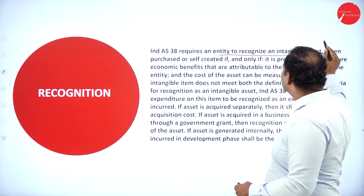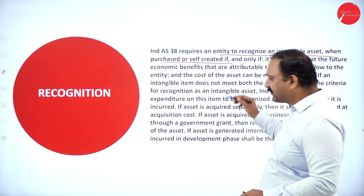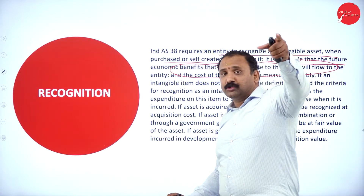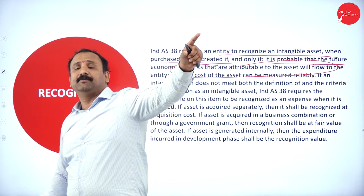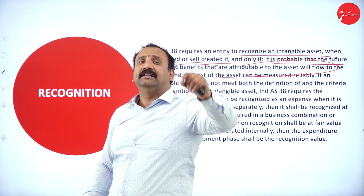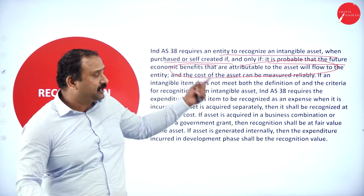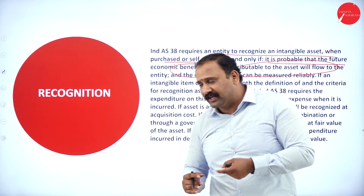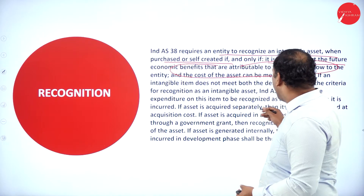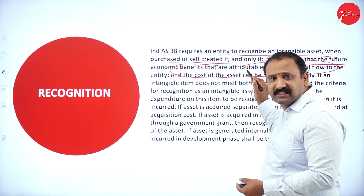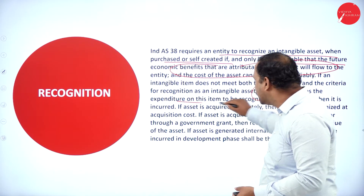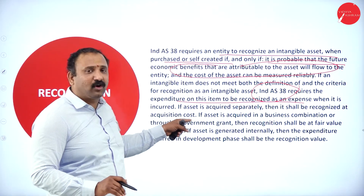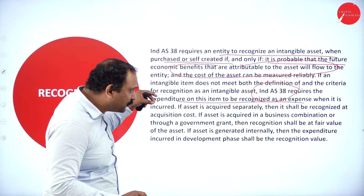An entity recognizes an intangible asset — purchased or self-created — only if it is probable that future economic benefits are attributable to the asset. For example, if ISRO or NASA develops a technology that over the next 10 years will measure weather prediction or atmospheric pressure, that technology is going to derive economic value for the organization. Under IND AS 38, the expenditure on that item is to be recognized as an expense at the cost and rate at which it is acquired.